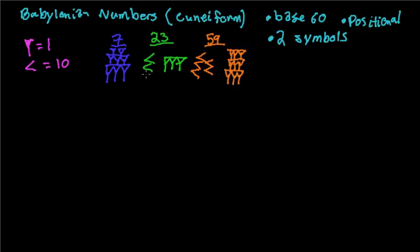What if we want to represent something bigger? Well, in this number system, the symbol I said was worth 1 at first — it can also be 60, or really a lot of different numbers. Let's do an example. Let's say I want to represent the number 183. After we represent 59, if I draw one of these symbols to the left, it would actually be worth 60.